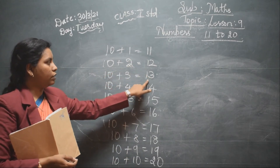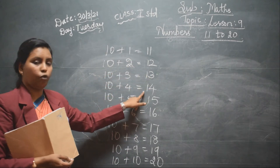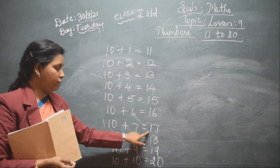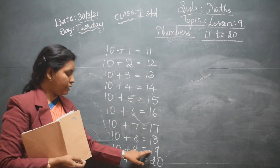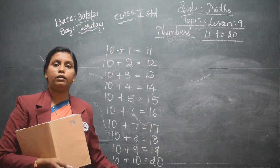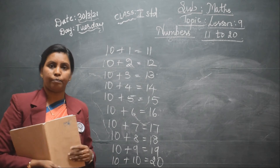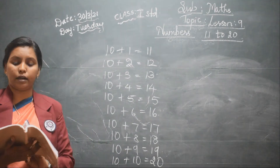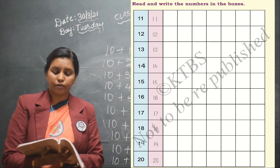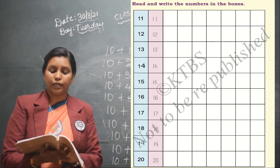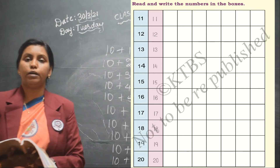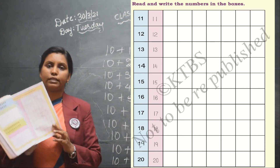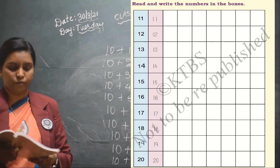The numbers are: 11, 12, 13, 14, 15, 16, 17, 18, 19, and 20. On page number 106 another activity has been given: read and write the numbers in the boxes, so you have to complete this activity by yourself.